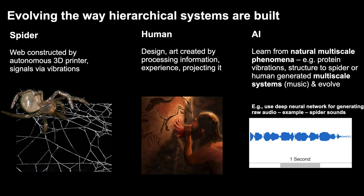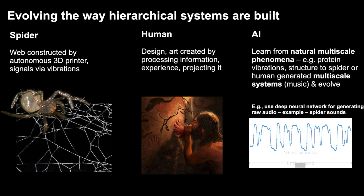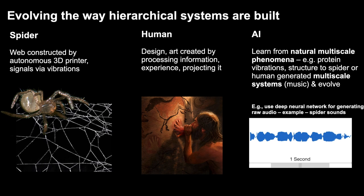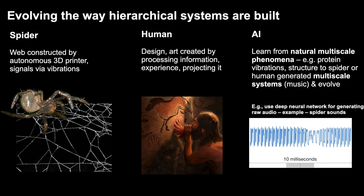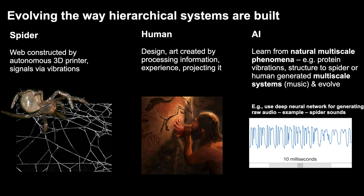Here we show how we can evolve the way hierarchical systems are built. A spider uses vibrations as a way of sensing the environment, communicating with other spiders, sensing threat, and detecting prey. They process the signals they collect in their brain and make decisions — about how to build the web, just like an autonomous 3D printer. They build webs by assembling and depositing materials in space, repairing the web, and interacting with other spiders, forming an autonomous, smart, and intelligent material system.